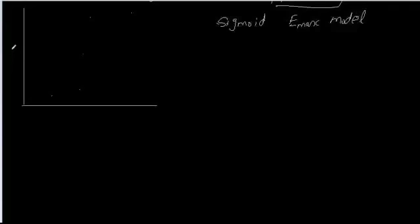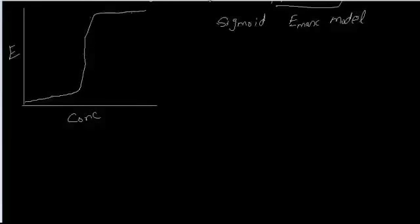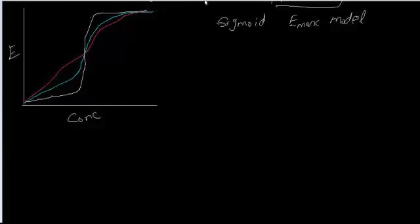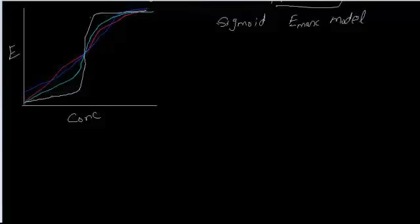Let's take a look at the example. The y-axis is the effect and the x-axis is concentration. We have a curve like this, another curve like this, and one more — so we have four curves. Let's call them example 1, example 2, example 3, and example 4.